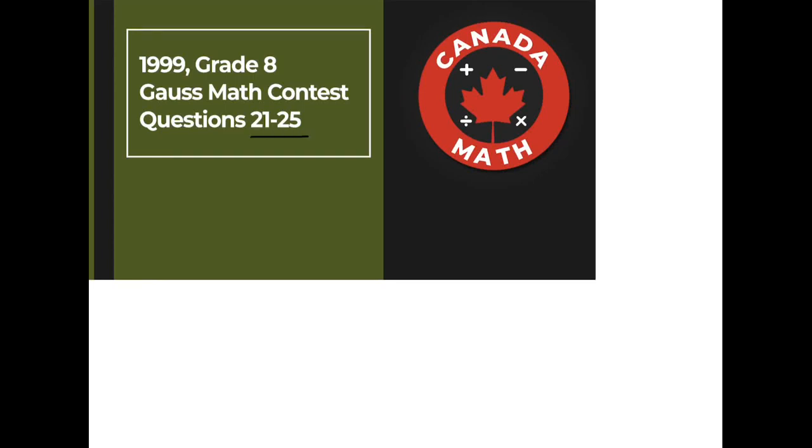Questions 21 through 25 of the 1999 Grade 8 Goss Math Contest is what I will discuss in this video. The sum of seven consecutive positive integers is always...